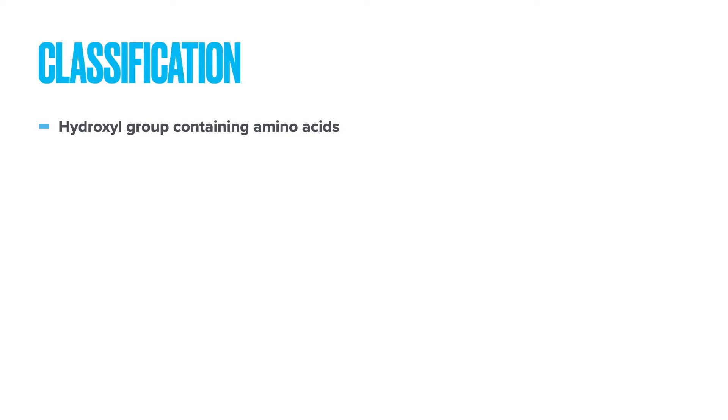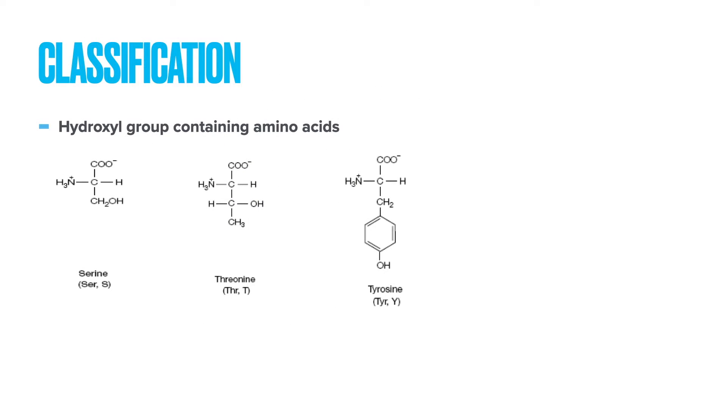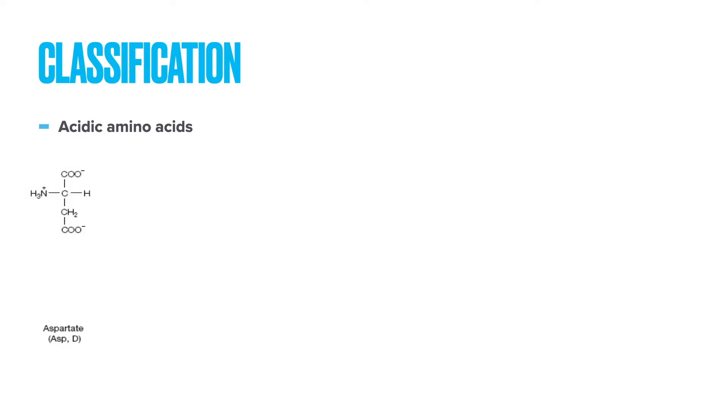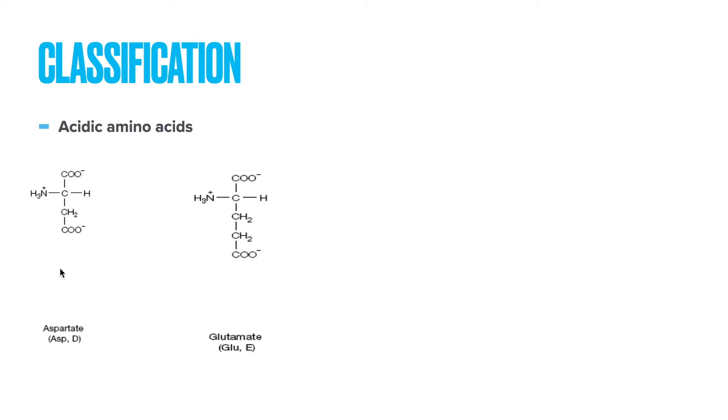We have three hydroxyl-containing amino acids: serine, threonine, and tyrosine. As you can see in their side chains, each contains a hydroxyl group. We also have two acidic amino acids: aspartate and glutamate. Why are they acidic? Under physiological pH 7.4, the side chain of aspartate has a net negative charge — there are two negative charges and one positive charge, giving a net negative charge. Similarly, glutamate also has a net negative charge. That is why aspartate and glutamate are negatively charged amino acids under physiological pH 7.4.